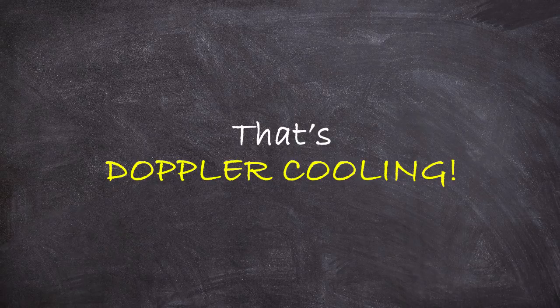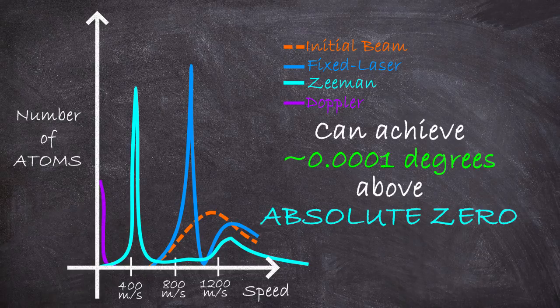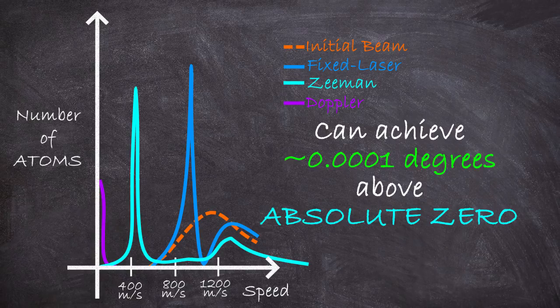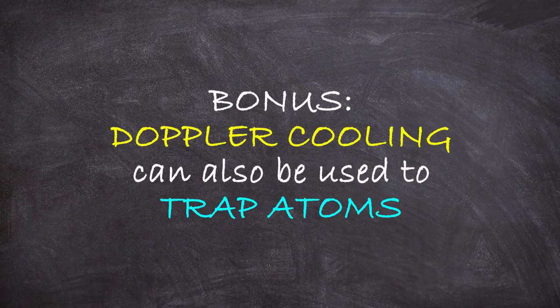And voila, Doppler cooling. Using this method, you can get to temperatures of about a few hundred millionths of a degree, or about 250 times colder than the limits of Zeeman cooling. Furthermore, what makes Doppler cooling different from the others is that it is also a trap of atoms.